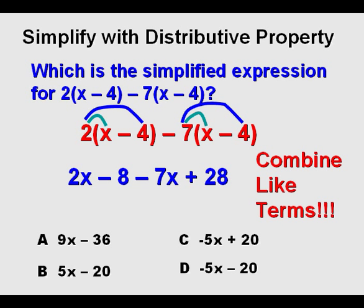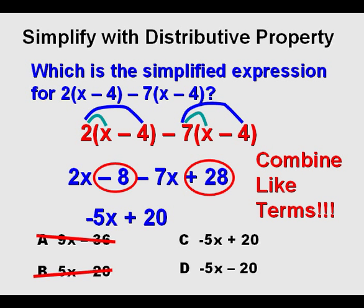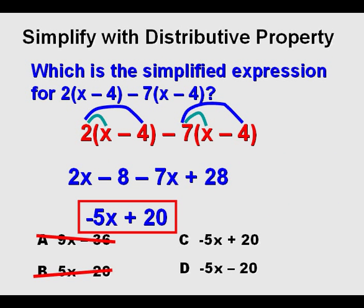The next thing we need to do is combine like terms. Here we have 2x minus 7x, and 2x minus 7x is negative 5x. Based on that we can eliminate answers a and b already because they do not have negative 5x for their x term. The last thing we need to do is take negative 8 plus 28 and we get plus positive 20. And so therefore, based on this, c would be our correct answer.